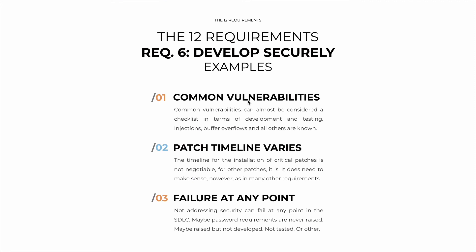Some key examples: common vulnerabilities can almost be considered a checklist in terms of development and testing — check for injections, buffer overflows, cross-site scripting, and all others. You can literally create a checklist for your developers. They're all known and easy to protect against. Also remember that the patching timeline varies: while the timeline for critical patches is not negotiable, for other patches it is flexible but must make sense. If other patches are installed within two months because that's synchronized with a regular vulnerability testing practice, that's fine. But if they're installed after two months just because, you fail this requirement.